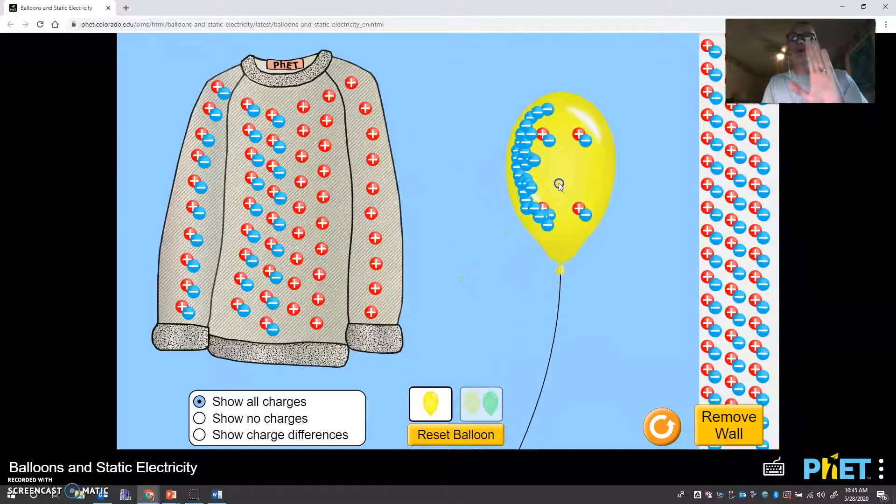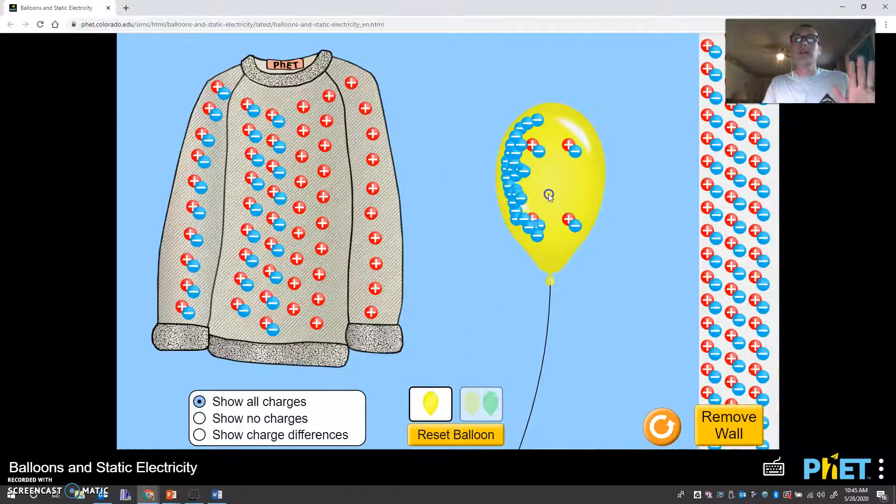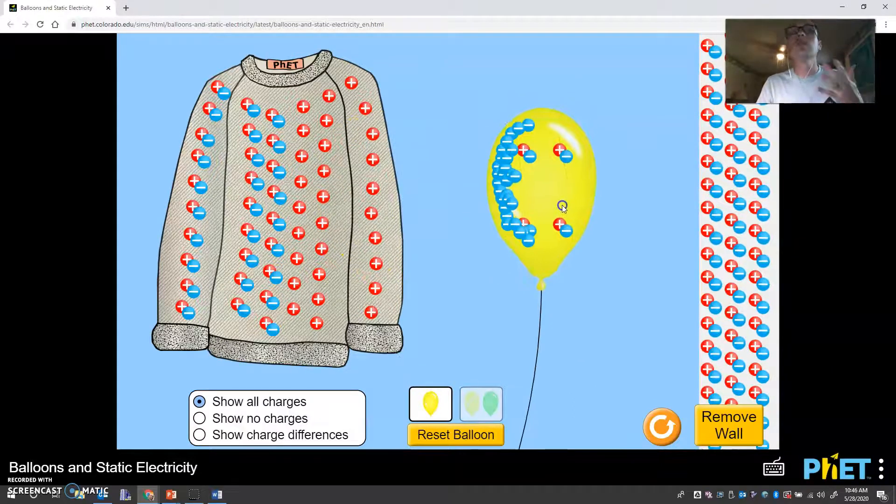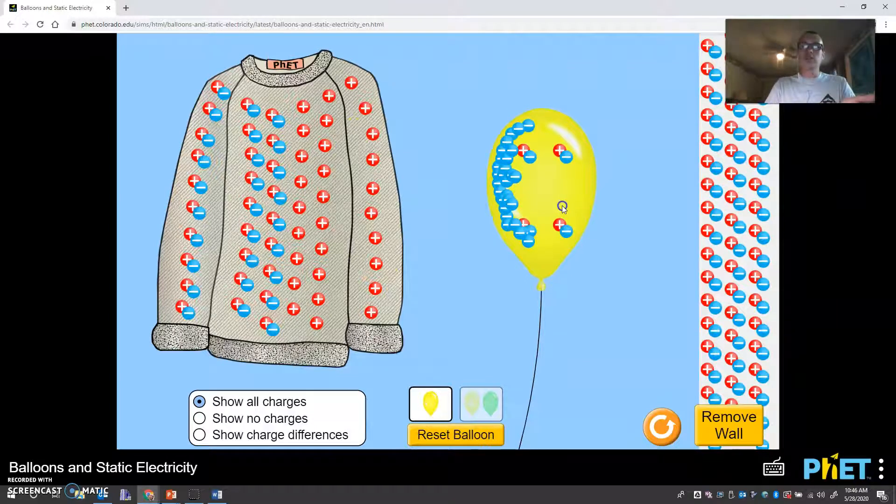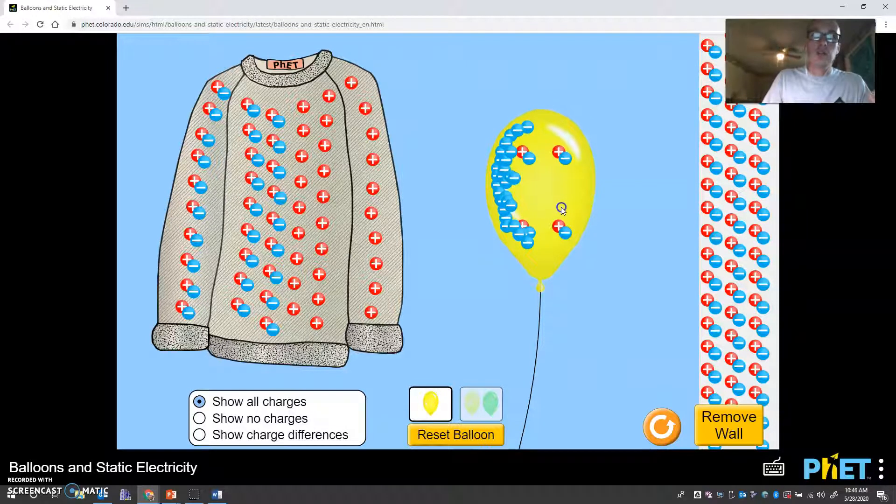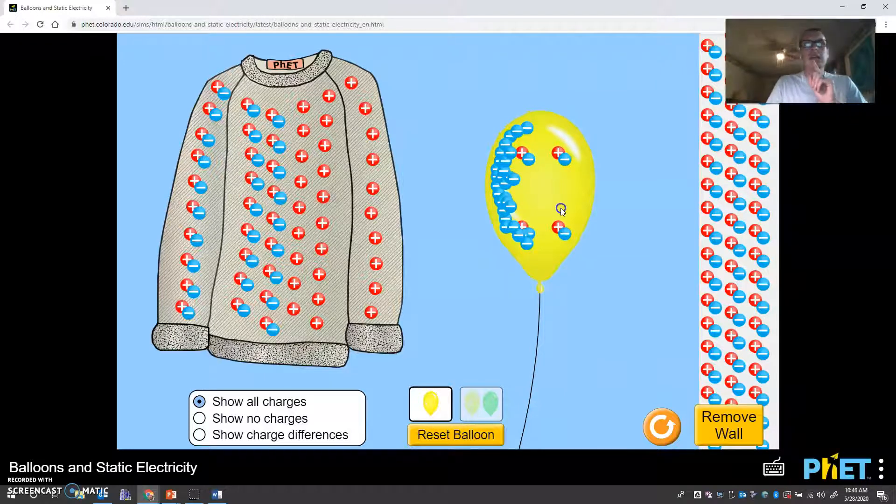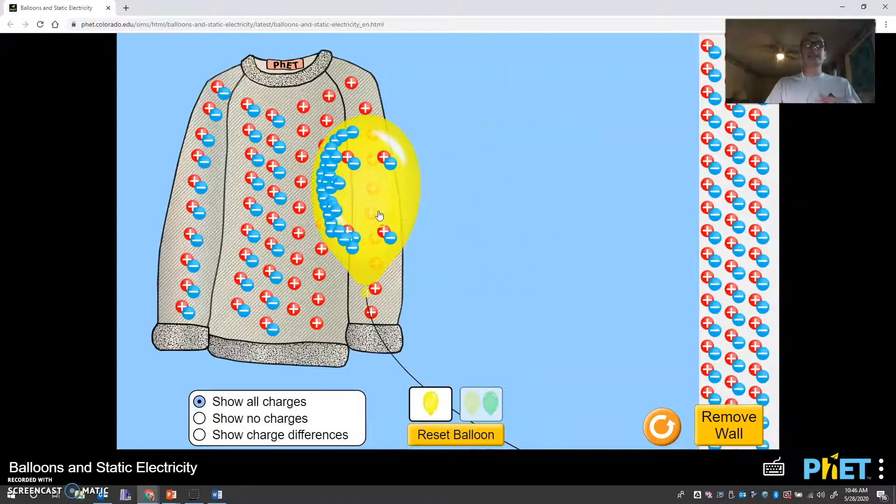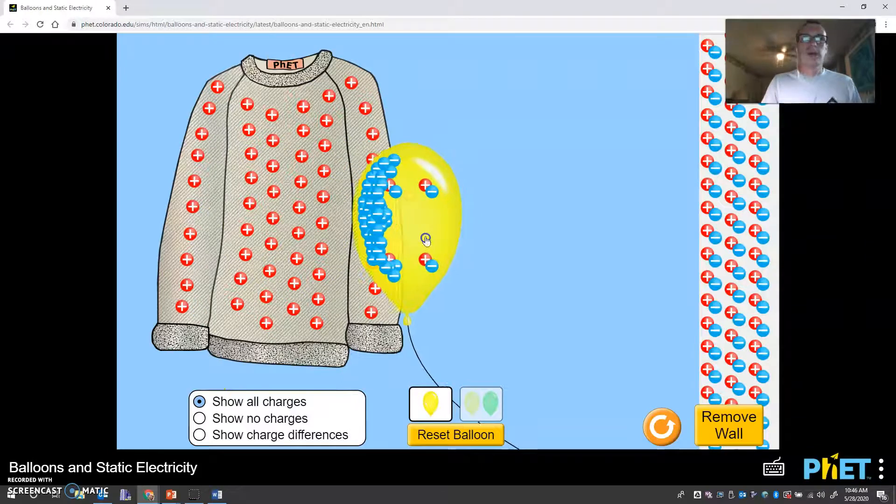Now you notice what happens when I pull the balloon over and hold it over here. If I let it go, then it attracts over to the sweater. Why does it do that? Well, look at the balloon. What kinds of charge does it have on it? It has more negative charge than positive charge. Look at the sweater. What does it have more of? It has more positive charges. And what do positives and negatives do? Or what does the positive sweater and the negative balloon do? Opposites attract. That's right. They attract. And that's why this goes over to the sweater.